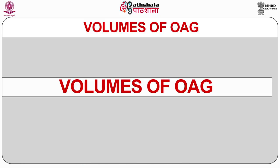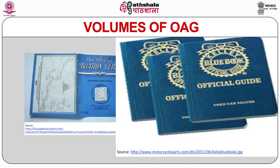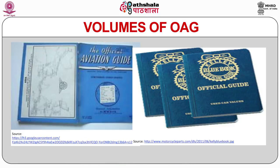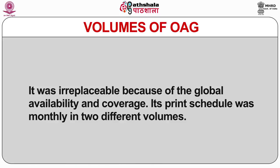Let us discuss the volumes of Official Airline Guides. Some travel experts remark that in the acronym OAG, O stands for globe, while others say it is short for 'official.' During the print and paper ticket era, it was mandatory for all agencies to have a copy of OAG — it was as sacred as the Bible for the travel fraternity. Its print schedule was monthly in two different volumes.